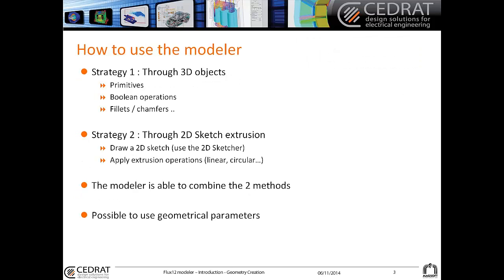How to use the 3D modeler? We have two strategies. The first one is through 3D objects — you can use primitives, boolean operations, fillets, chamfers, and other functionalities. The second strategy is to use a 2D sketch and then make an extrusion, which can be linear or circular. The modeler is able to combine both methods.